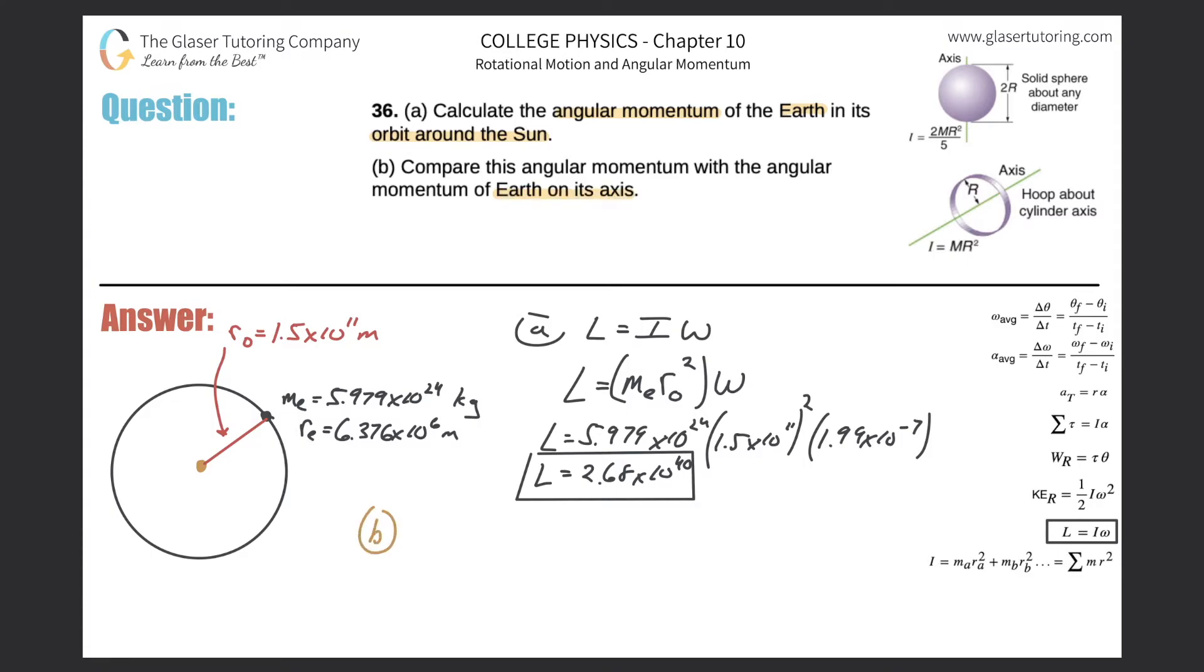Now the picture changes, right? For the moment of inertia, the formula stays the same, L equals I omega. But now the nature of the Earth spinning about its axis would be best approximated by this picture. The moment of inertia for a solid sphere spinning about any particular diameter is 2mr squared over 5.